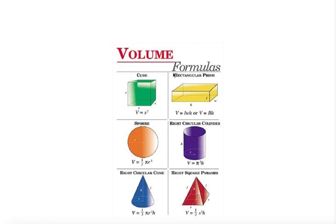We can see these shapes on the diagram: cube, rectangular prism, sphere, right circular cylinder, right circular cone, and right square pyramid. These are the volume calculation formulas for each of those shapes.